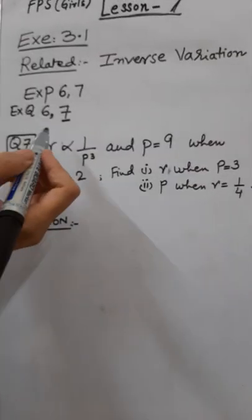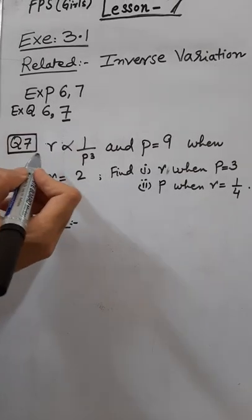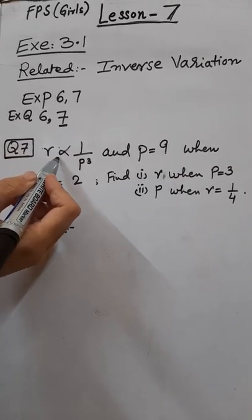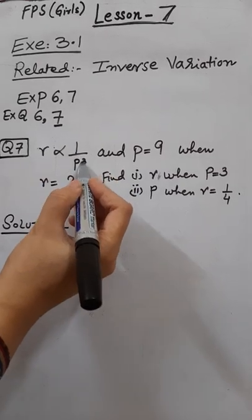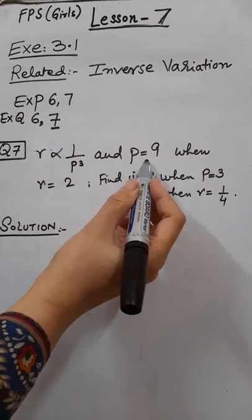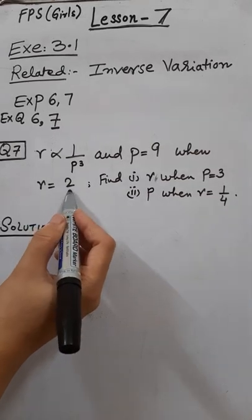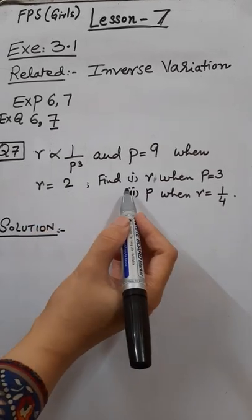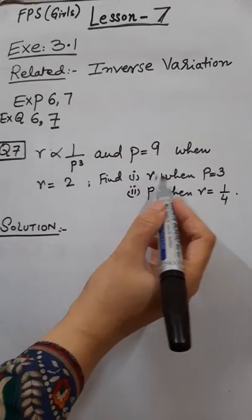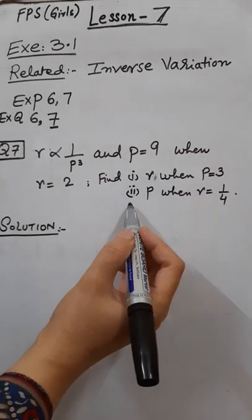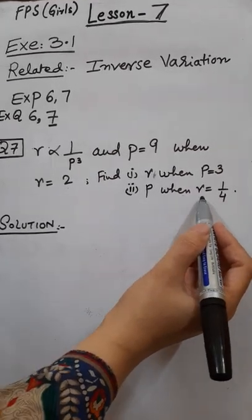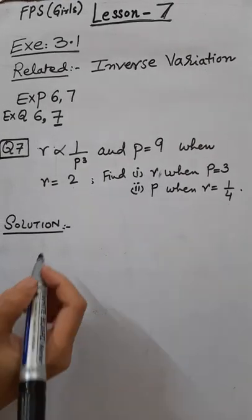Question number 7 is: R varies inversely with P³, and P equals 9 when R equals 2. In the first part we need to find R when P equals 3, and in the second part we need to find P when R equals 1/4.